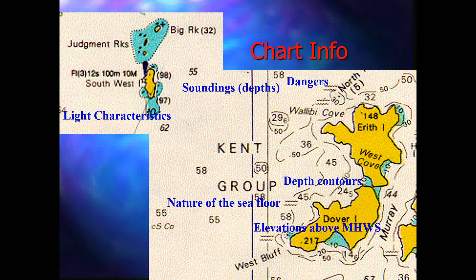In a closer view of the chart, you can see the sounding depths, light characteristics in close-up format, depth contours more clearly, and dangers to navigation. The nature of the sea floor is drawn there as well. These are chart symbols; you have to refer to publication 5011, which is the book where chart symbols are defined. Elevations above mean high water springs are given as well.